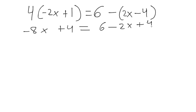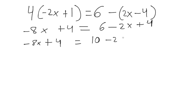When we do this, we get negative 8x plus 4 equals 6 minus 2x plus 4. Now step 3: combine the like terms. We do have like terms on the right side — the 6 and the 4 — which gives us 10. So now we have negative 8x plus 4 equals 10 minus 2x.